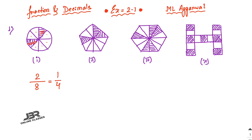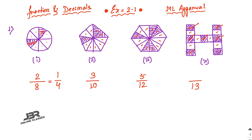For the next figure, count total parts: 1 through 10, so 10 parts total. The colored parts give an answer of 3 by 10. For number 3, counting gives 12 parts total, and 5 parts are colored, so the answer is 5 by 12.